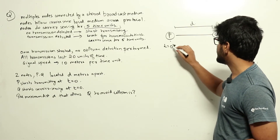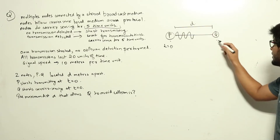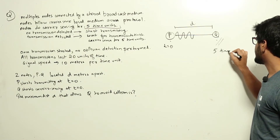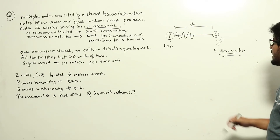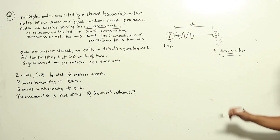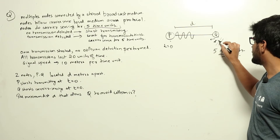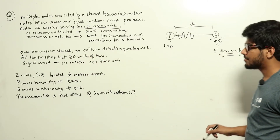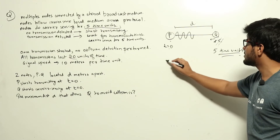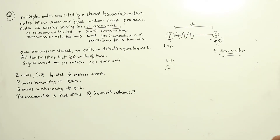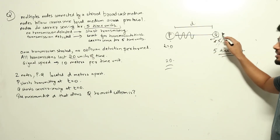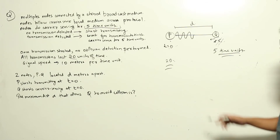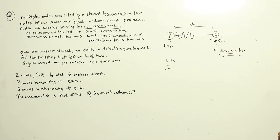At time t=0, P starts its transmission and Q starts carrier sensing. Q performs carrier sensing for five time units. After five time units, if there is no collision detected, Q will start transmitting. P's transmission lasts from t=0 to t=20. If Q starts transmitting at t=5, it falls within P's transmission window and will result in a collision.